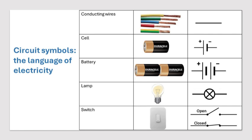A cell is a single unit that provides electrical energy, much like one battery you might use in a toy. The symbol for a cell consists of two vertical lines next to each other — one longer and one shorter. The long line represents the positive end, and the short line represents the negative end. You can think of the cell as a tiny power station that gives energy to the circuit. A battery is made up of two or more cells connected together to provide more power. In circuit diagrams, we show this by drawing multiple sets of the cell symbol connected in a row. By connecting them, we can power devices that need more electricity than a single cell can provide.